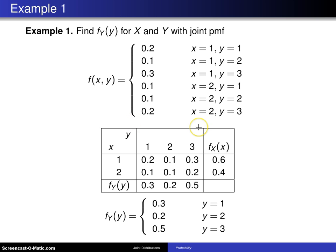If X is represented by the rows, you can see 1 and 2 are the possible values. Y is represented by the columns, and you can see 1, 2, and 3 are the possible values.